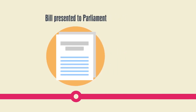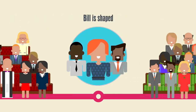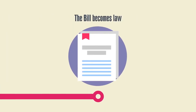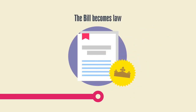MPs and members of the House of Lords comment on, debate or amend the Bill through several stages, and at the end of the process, apart from very rare circumstances, it must be agreed by both Houses. It's then passed to the Monarch, who gives formal approval, or Royal Assent, and the Bill becomes law, called an Act of Parliament.